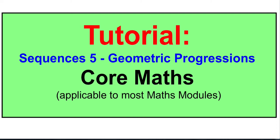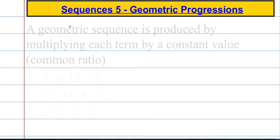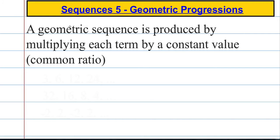What is a geometric progression? A geometric sequence or a geometric progression is produced by multiplying each term by a constant value, sometimes known as the common ratio and often denoted R.